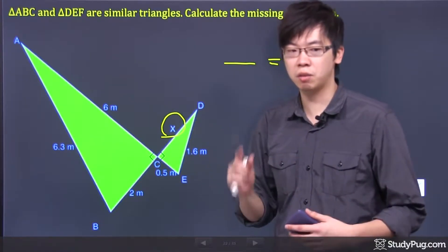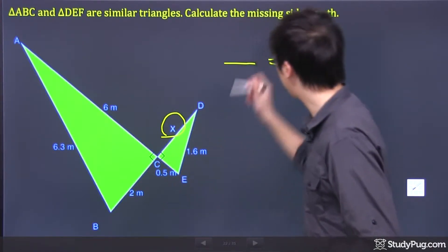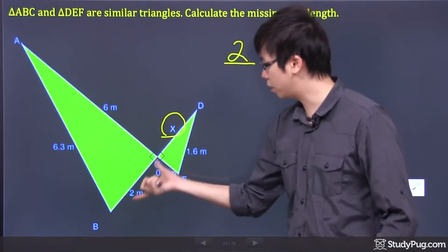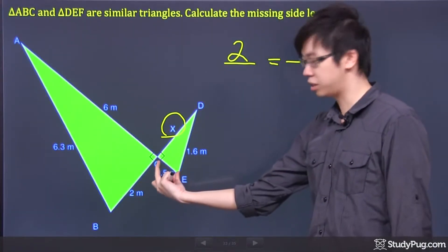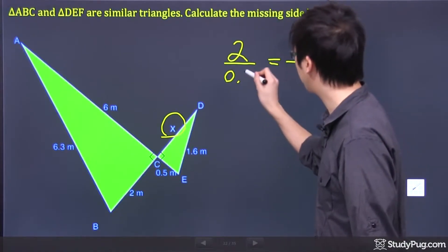My own little preference is I'm going to take the bigger number that goes first. So I'm going to put a 2 right here for the bigger triangle, this side right here versus this side which is 0.5.